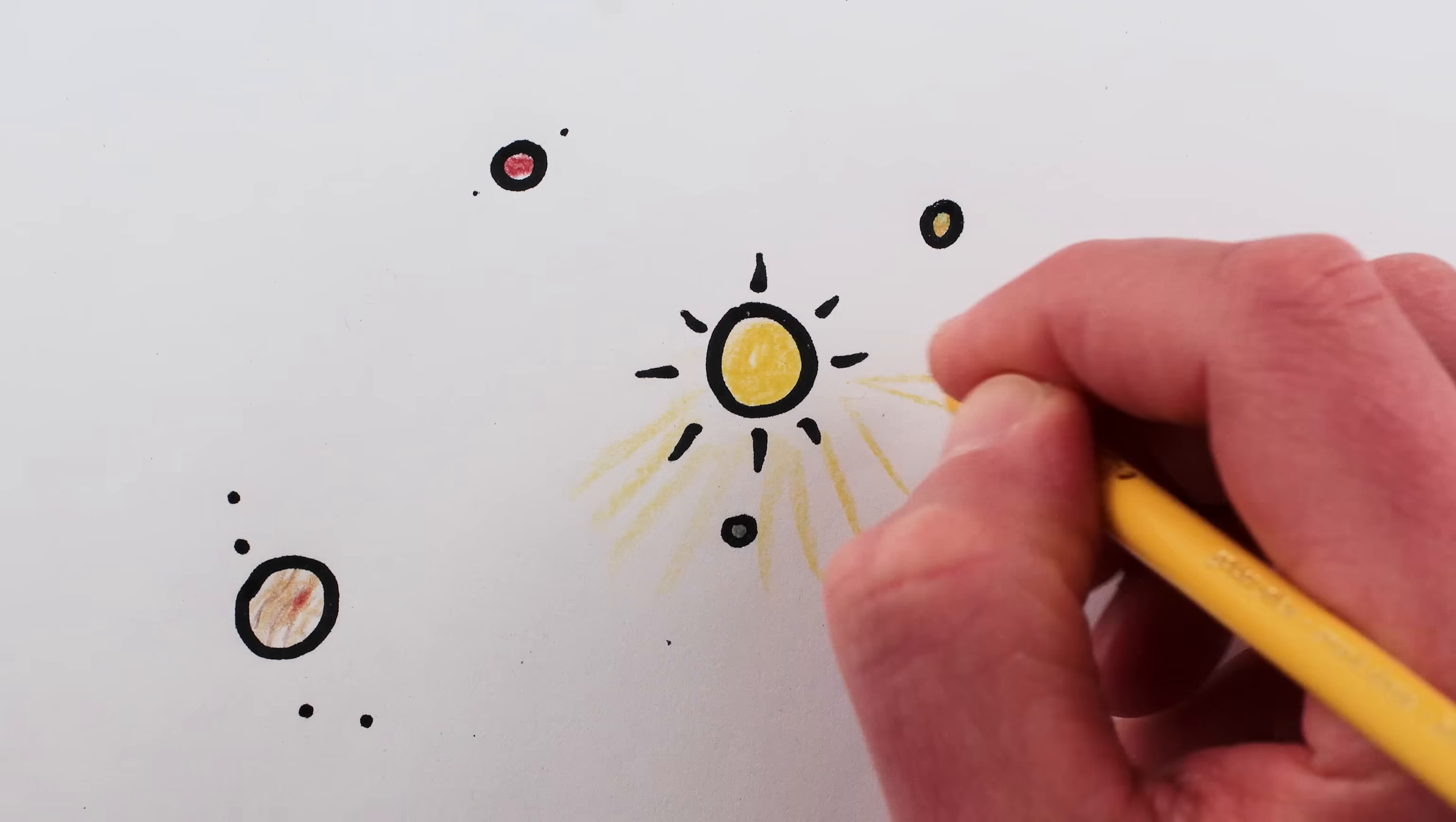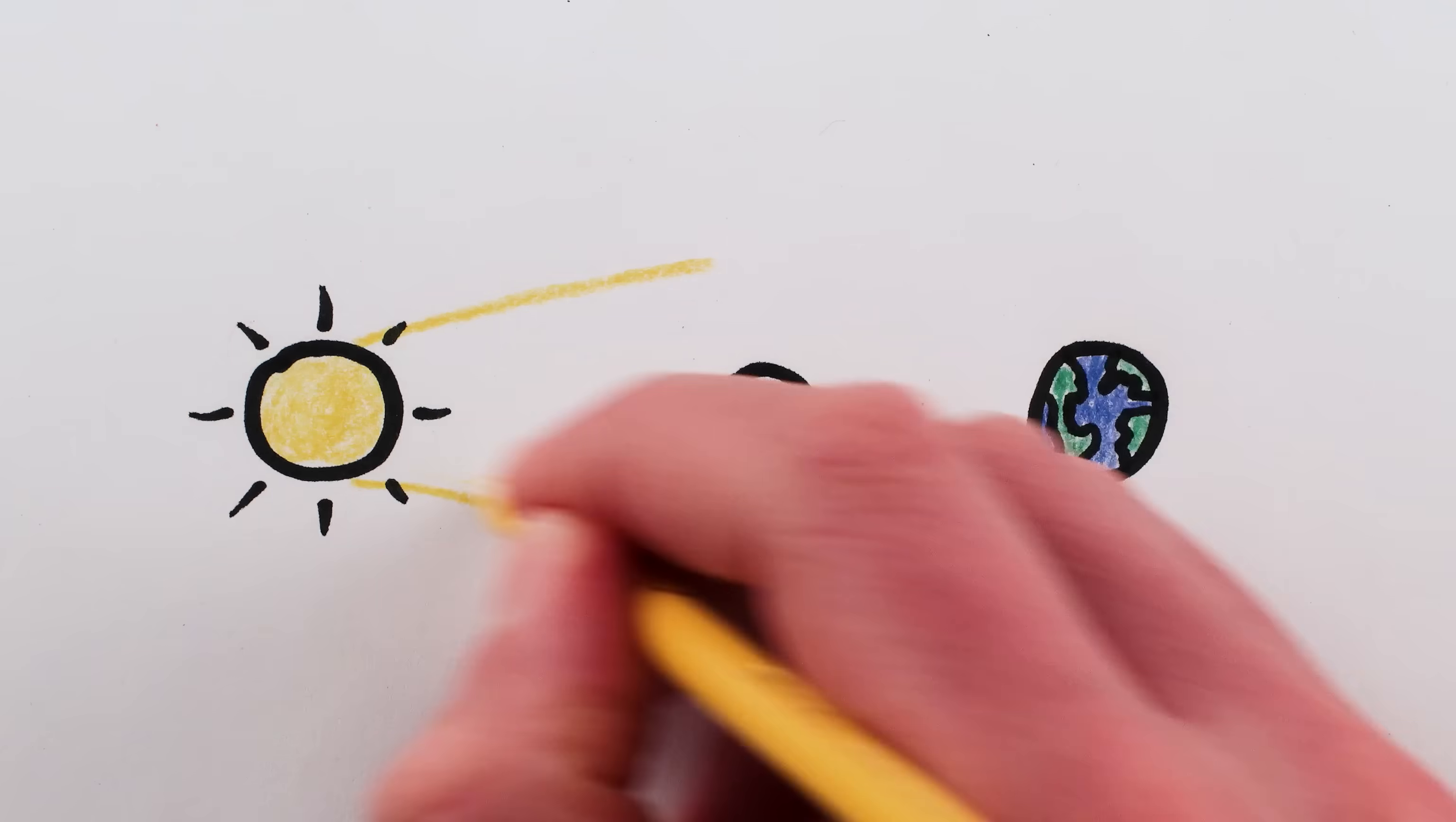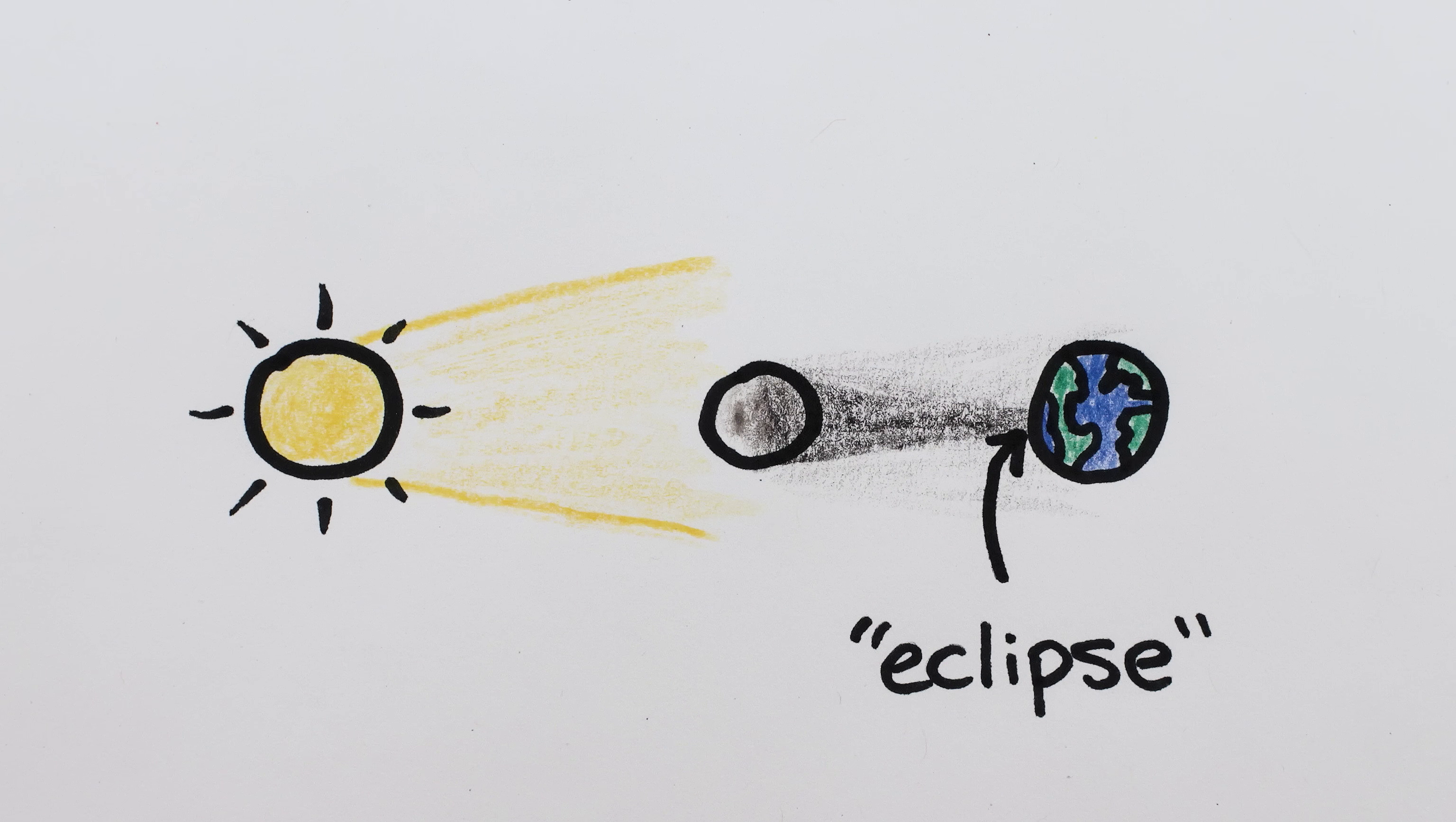Every planet and satellite is illuminated by the Sun and casts a shadow towards that point of the heavens which is opposite to the Sun. When the Sun's light is so intercepted by the Moon, that to any place of the Earth the Sun appears partly or wholly covered, he is said to undergo an eclipse, though properly speaking, it is only an eclipse of that part of the Earth where the Moon's shadow falls.